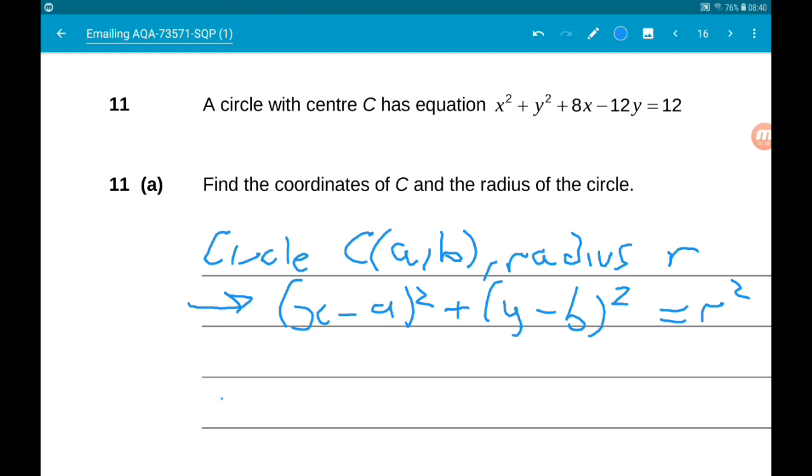So we've got x squared add 8x add y squared minus 12y is equal to 12.